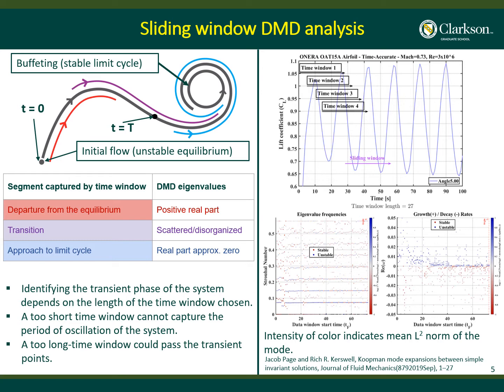The gray line represents a trajectory moving from an unstable equilibrium to a stable limit cycle. If you take a DMD data window from the red line — departure from equilibrium — the real part of the DMD eigenvalues is positive. If you take the data window from the purple line — the transition part — it gives a disorganized DMD eigenvalue spectrum and you cannot conclude anything. If you take the window from the blue line — approach to the limit cycle — the real part of the DMD eigenvalues is approximately equal to zero.